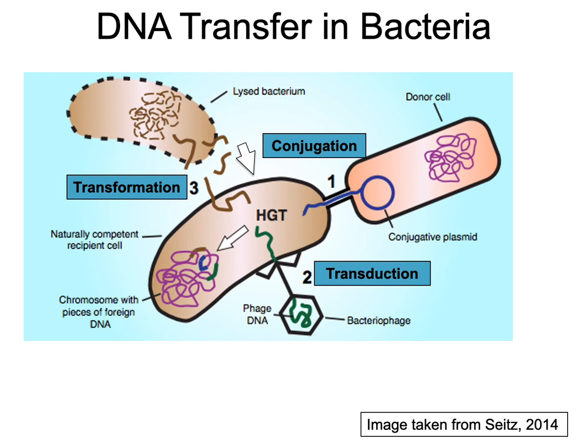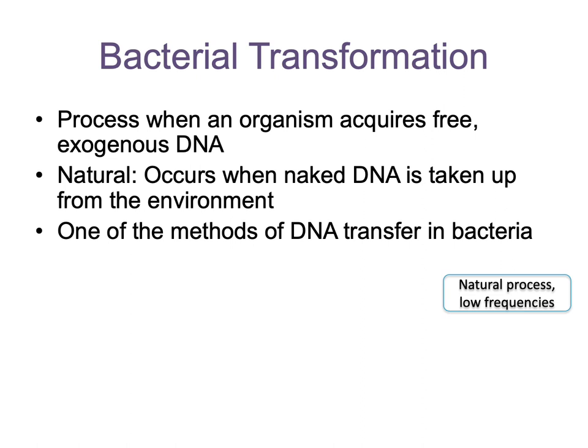In this process, transformation usually results in a stable genetic change brought about by the uptake of naked DNA. Naked DNA refers to DNA without any associated cell or protein. In a simple definition, transformation is basically a process when an organism acquires free exogenous DNA, also called naked DNA. Bacterial transformation can occur in two ways: natural and artificial. We will talk about artificial transformation later, as there are many methods in molecular biology that can be utilized to induce the uptake of free DNA.